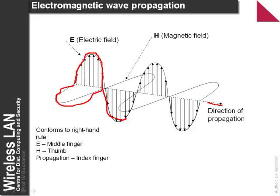When we have a change in the electric field, it causes a change in the magnetic field, which then causes a change in the direction of the wave. We have what's called the right-hand rule, where we can use our fingers. The E will point to the electric field, the thumb the H field, and the index finger will show the propagation. In this case, the E field is up and down, the H field is across, and the direction would be out of the page.